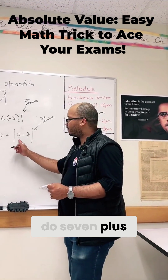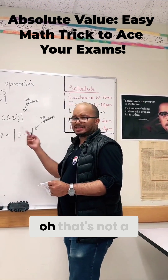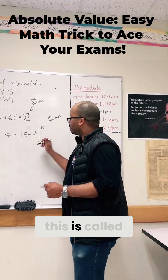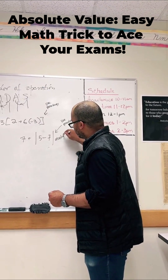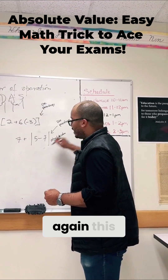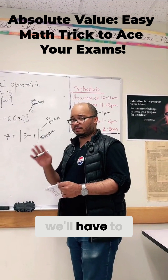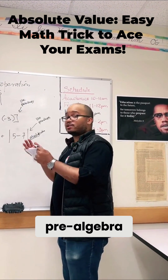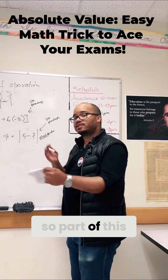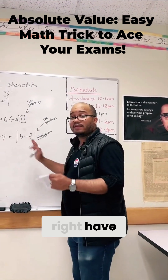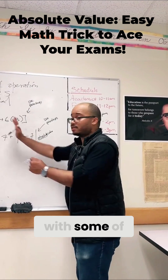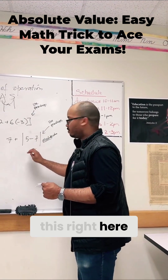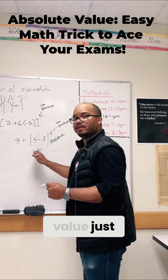I couldn't do seven plus five — maybe I thought that's not a parenthesis, so I'd just do seven plus five minus seven. No, this is called the absolute value; we'll go over this later. It's something from middle school, but right now we're doing pre-algebra and algebra one. Just treat this like a parenthesis — five minus seven would be negative two.